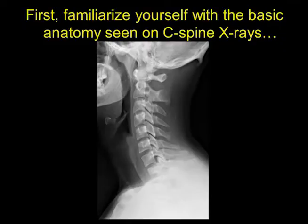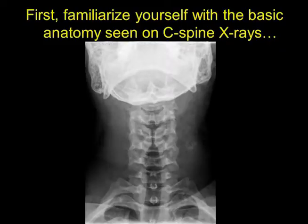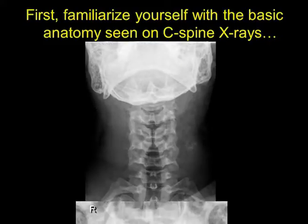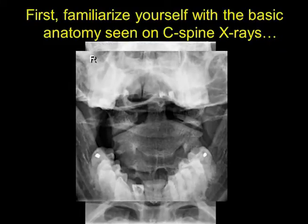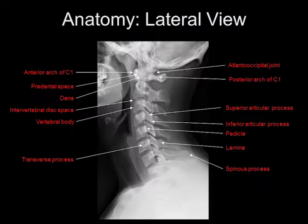First, it's very important to familiarize yourself with the basic anatomy seen on cervical spine x-rays. That includes the lateral, the AP, and the odontoid views. On the lateral view, some things to be aware of are the anterior arch of the C1 vertebral body.